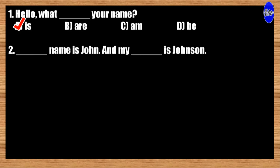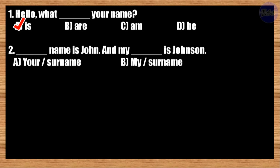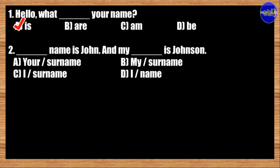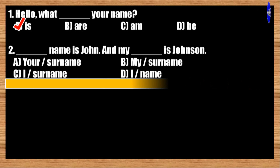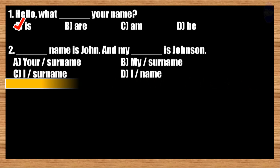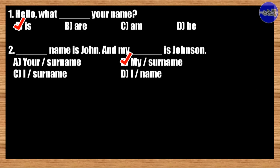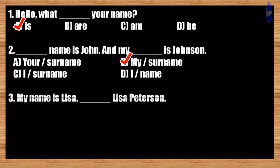Number two: Blank name is John and my blank is Johnson. A: your, surname; B: my, surname; C: I, surname; D: I, name. The correct answer is option B. My name is John and my surname is Johnson.